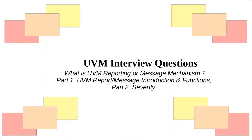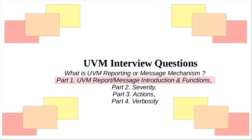Part two is severity, which is basically UVM info, error, UVM fatal, and warning. Part three and four provide a little bit more detail in terms of UVM messages, related actions and verbosity. So let's go on to part one.